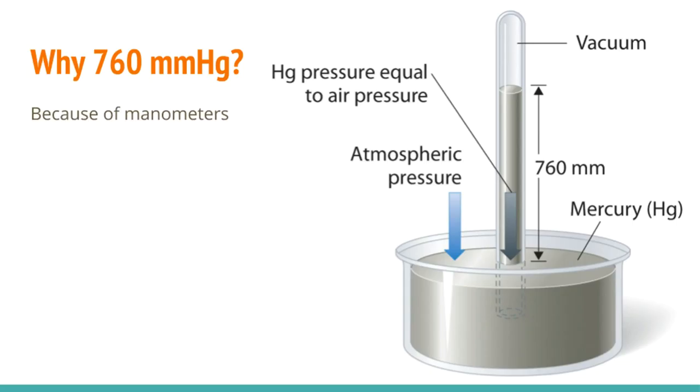And it's also 760 torr, because one of the early pioneers of the study of air pressure and so on was an Italian dude named Torricelli. But Torricelli is really long, and you don't want really long names for your units. Your units are supposed to be short and easy to write, so torr. And that's where 760 millimeters of mercury, or 760 torr, comes from.